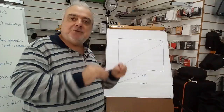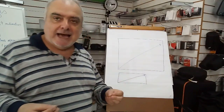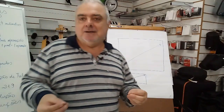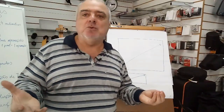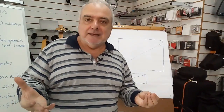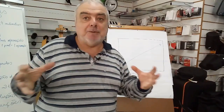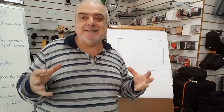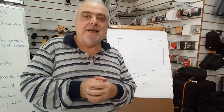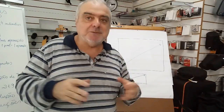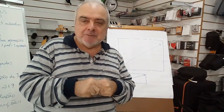Isso a gente chama de proporção de tela. A tela que a gente chama no popular de tela retangular ou tela quadrada — na realidade tem uma proporção precisa. E não são poucas proporções que existem. Existem muitas proporções de tela por aí circulando.